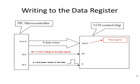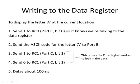Writing to the data register is very similar. The only difference is that we put a 1 on the RS pin on port C bit 0 to indicate we're talking to the data register. We send an ASCII character out port B across the eight data wires D0 through D7, then pulse the E pin high then low to lock that data in. For example, to display the letter A at the current cursor position, send a 1 to RC0, send the ASCII code for capital A to port B, pulse RC1 high then low, and delay 100 milliseconds.